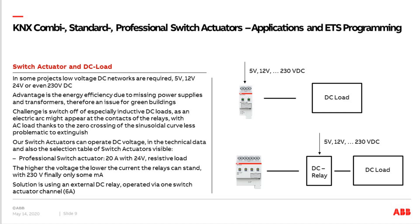Of course, what is always possible is to say it's too risky and use an additional DC-capable relay made for DC switching, with the load behind it. Then our switch actuator only controls the control circuit of the relay, with no load current through it. In principle it's possible to switch DC directly, but be careful and please check whether it's possible for your specific case.